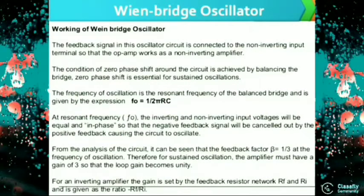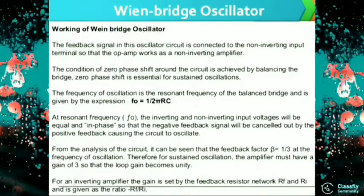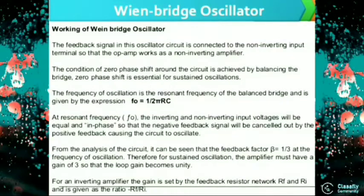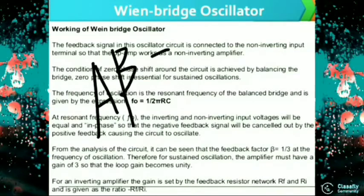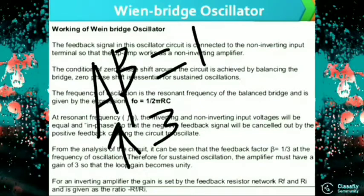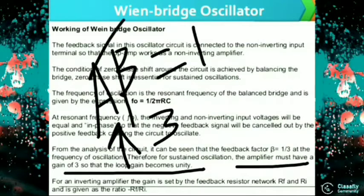From the analysis of the circuit, the feedback factor beta is equal to 1/3 at the frequency of oscillation. Therefore, for sustained oscillation, the amplifier must have a gain of 3 so that the loop gain becomes unity — satisfying the Barkhausen criteria, which states that A·β = 1.